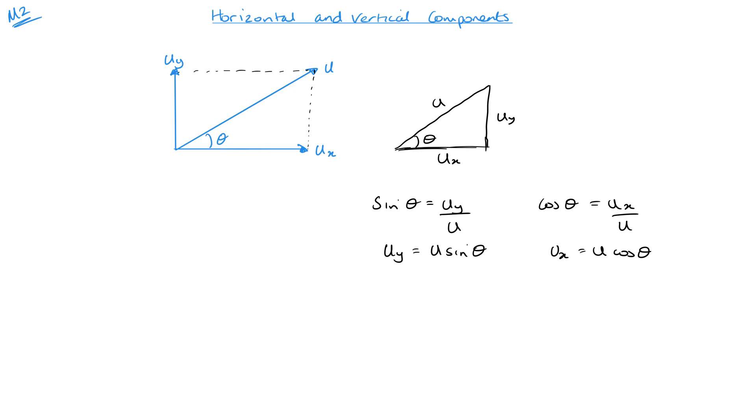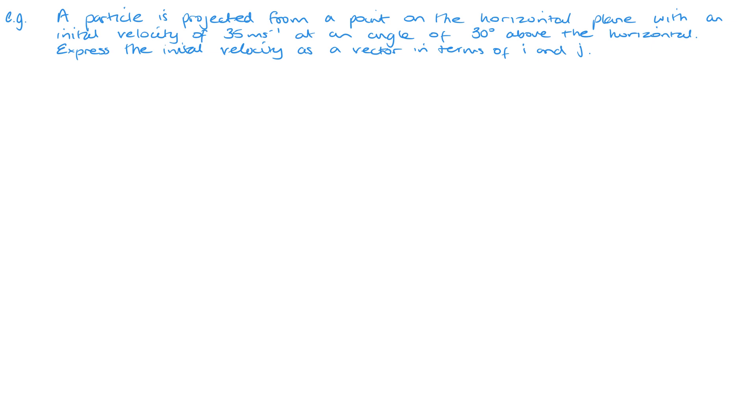Now let's have a look at an example. We've got a particle projected from a point on a horizontal plane with an initial velocity of 35 meters per second at an angle of 30 degrees above the horizontal. So here's our horizontal plane, 30 degrees above. This is theta, but in our case the angle is 30 degrees, this is our u of 35 meters per second.